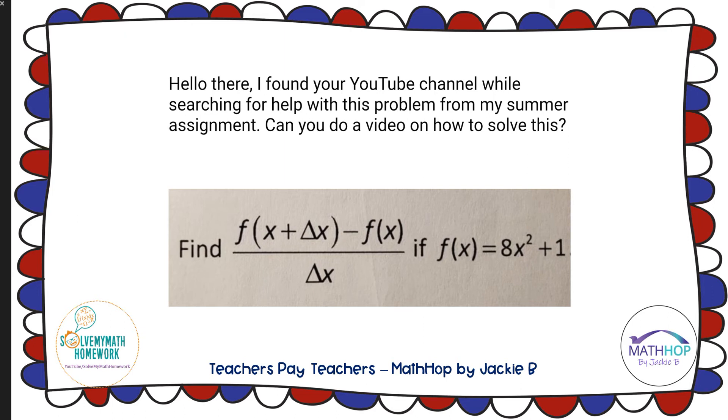Hey there everybody, got this email asking if we could solve this problem that looks a little stranger than it actually is. It says find f of x plus delta x, this triangle means delta represents the change in something, so the change in x, minus f of x all over delta x or the change in x if the function f of x is 8x squared plus 1.